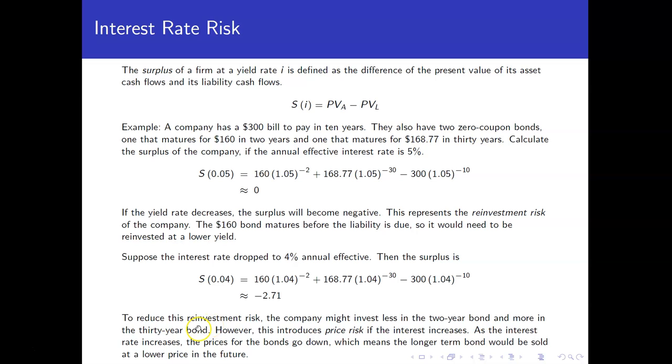Okay, so let's say we're going to try to mitigate some of this reinvestment risk, and to do that means that instead of investing $160 in the first bond, maybe we're going to invest a little bit less and move some of that over to the 30-year bond a little bit more.